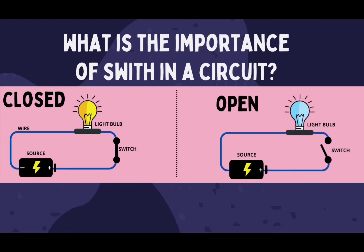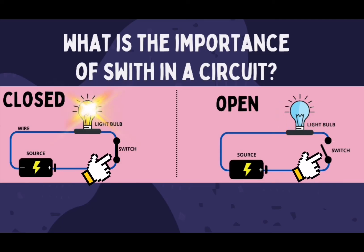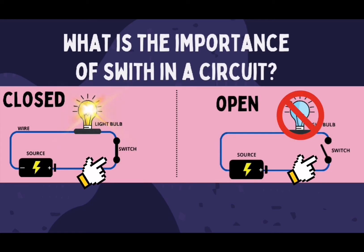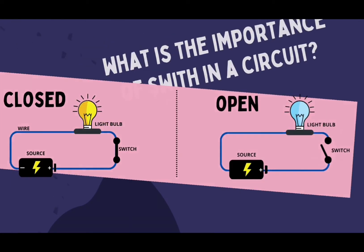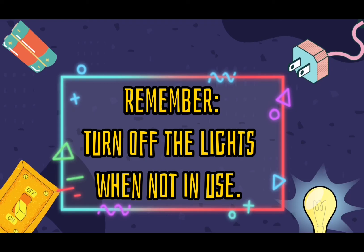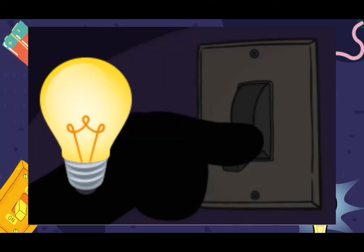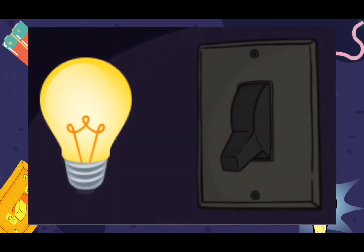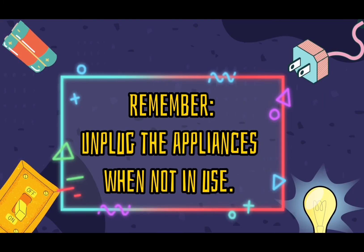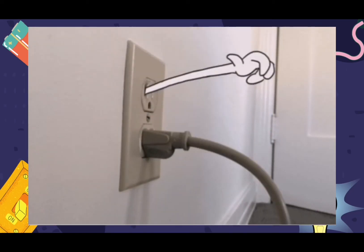What is the importance of a switch in a circuit? From this comparison, we can say na ang switch ay nagkukontrol ng flow of electricity from the source to the electrical component or light bulb. Kaya't mahalagang tandaan na kapag hindi natin kailangan ng ilaw sa loob ng tahanan, ay patayin ang switch nito upang makatipid sa kuryente. Gayun din sa ibang appliances — kung hindi gagamitin, ay bunutin o tanggalin sa source of electricity.